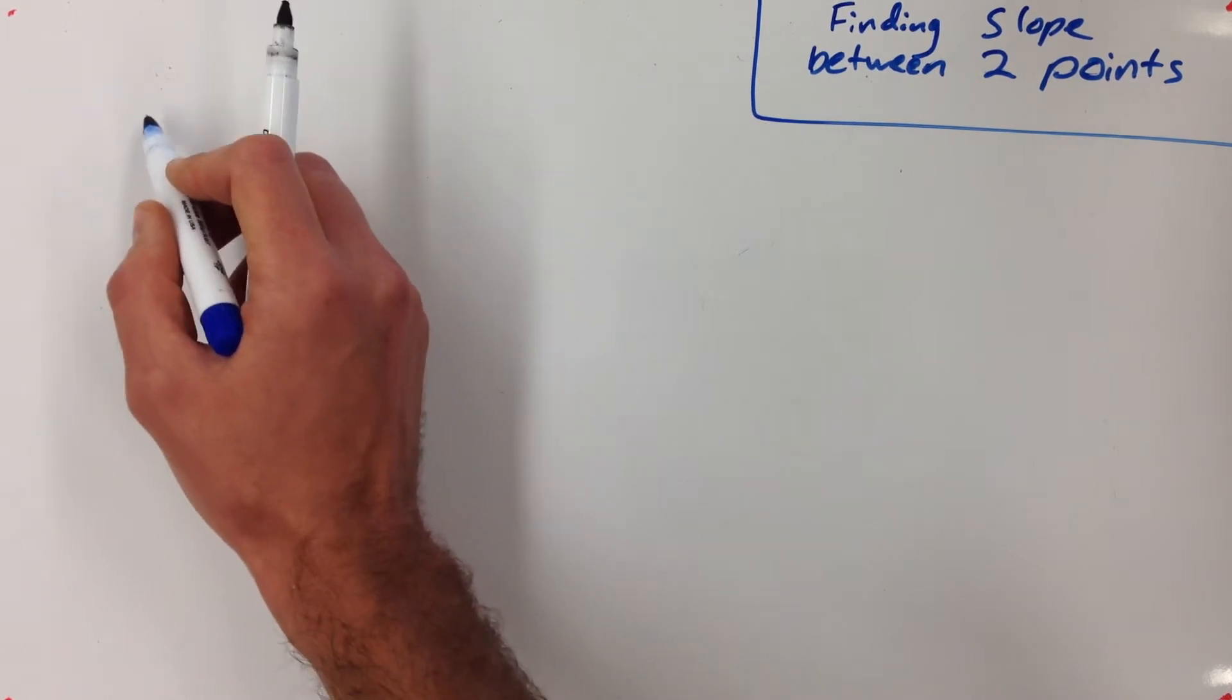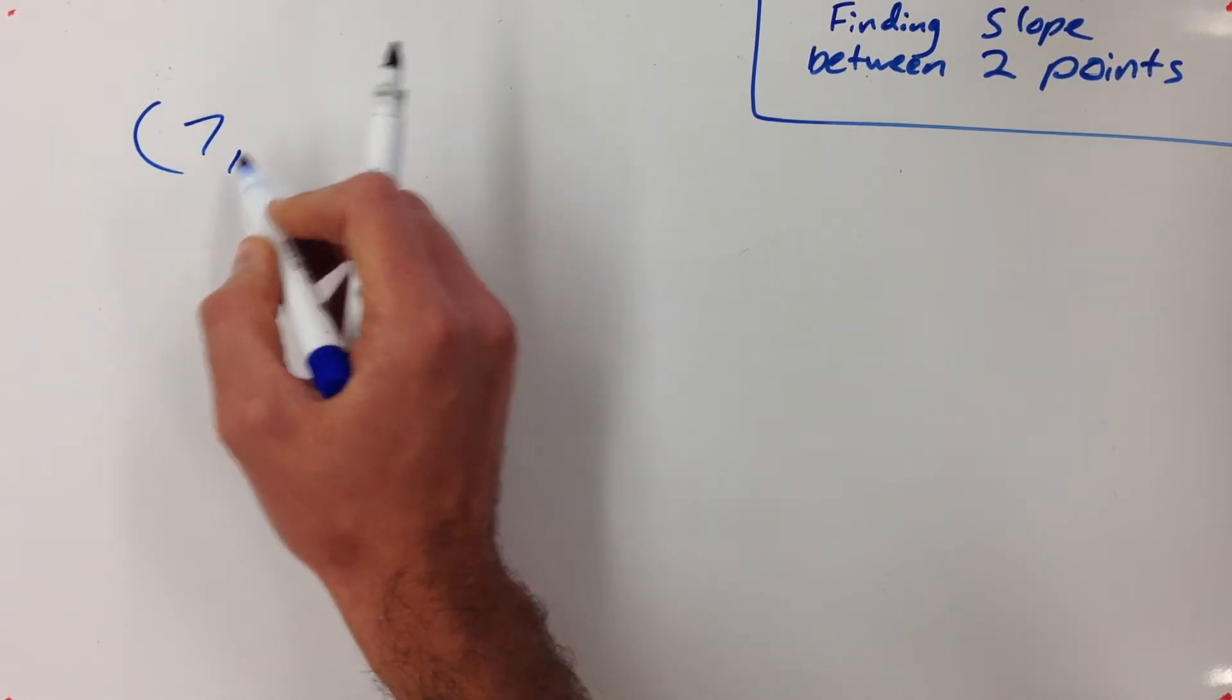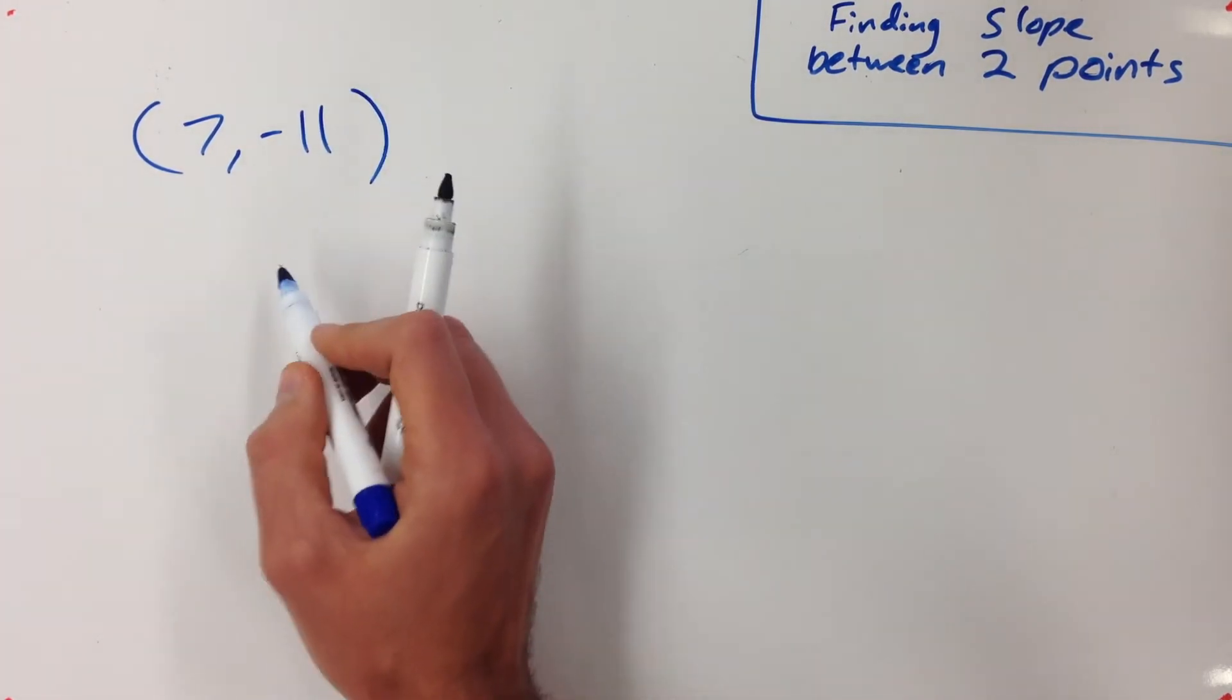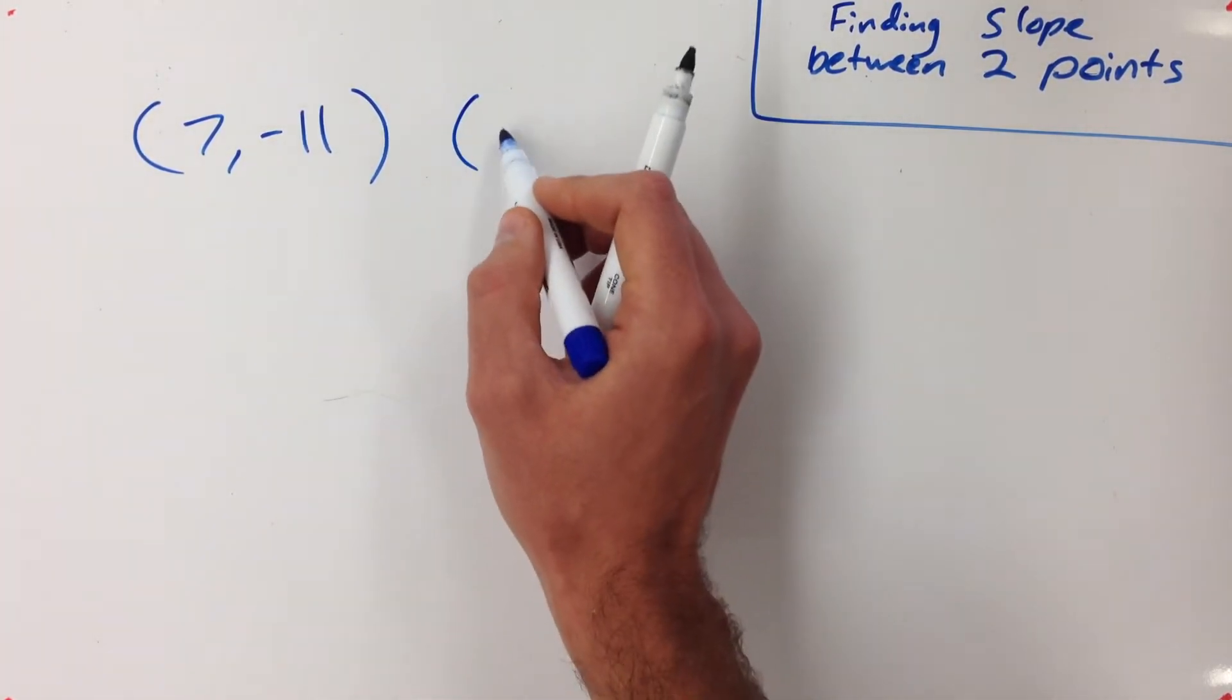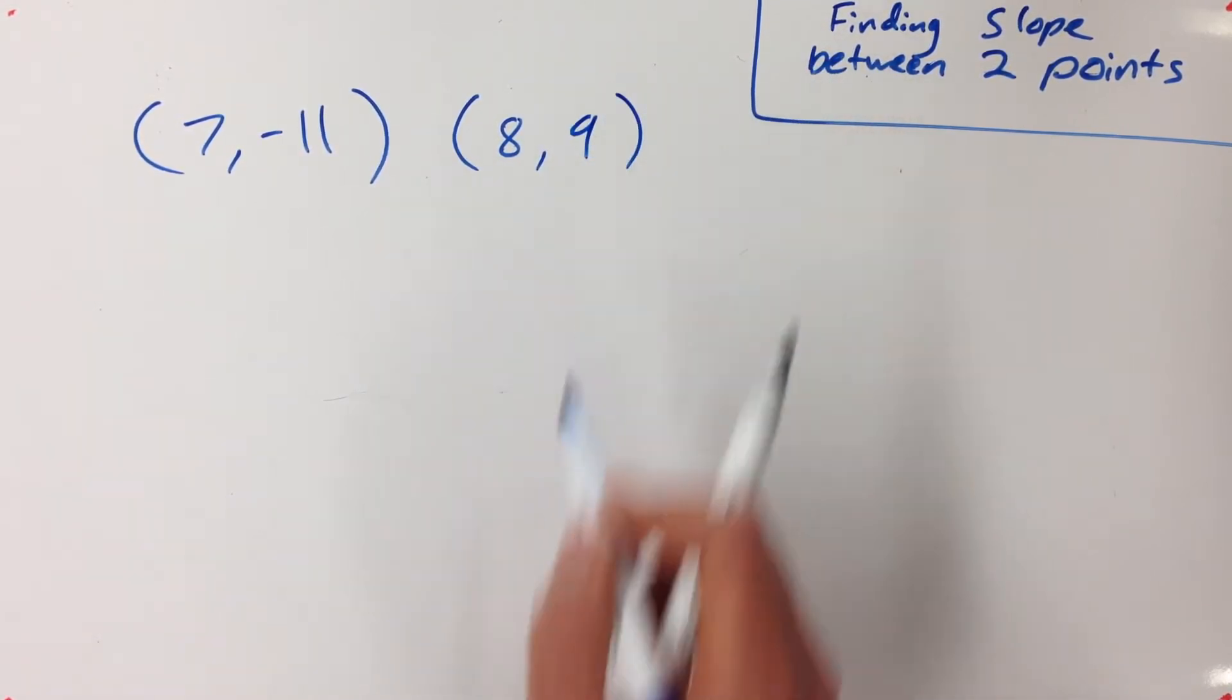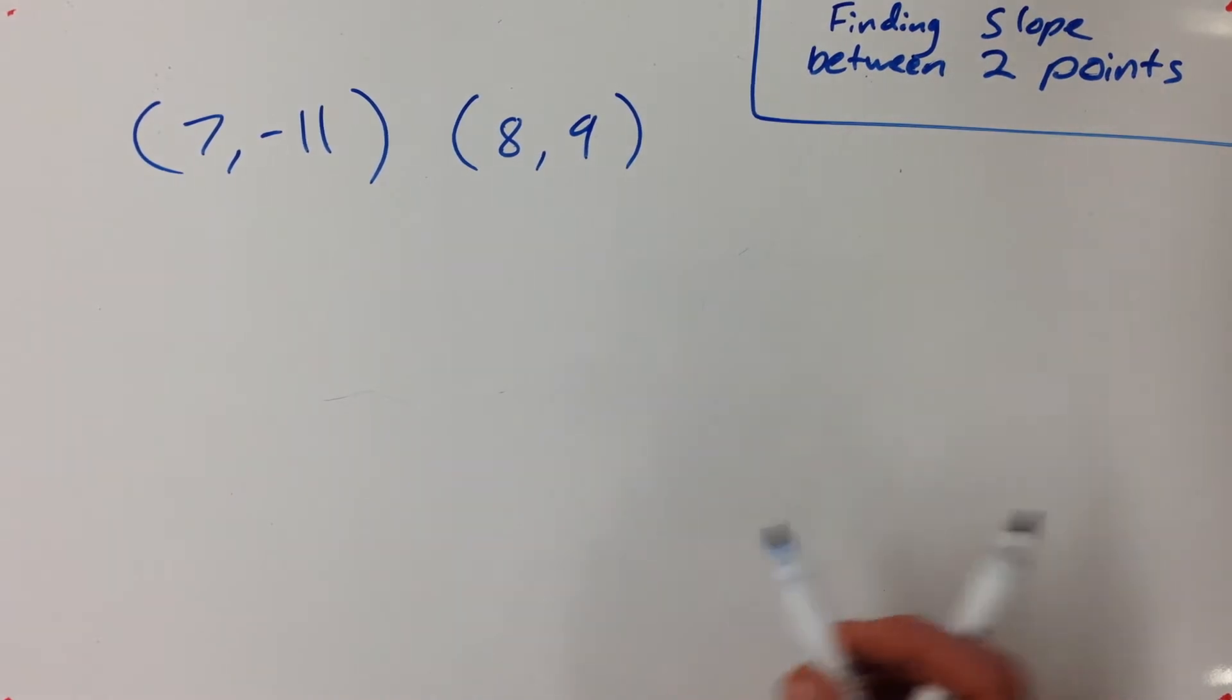So let's say I had seven, negative eleven and eight, nine. So these two points.